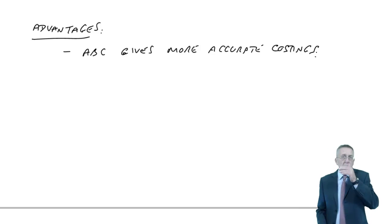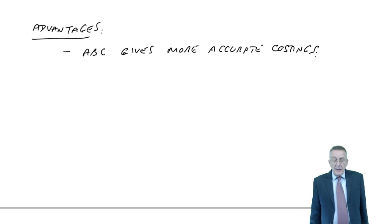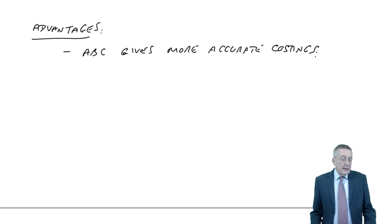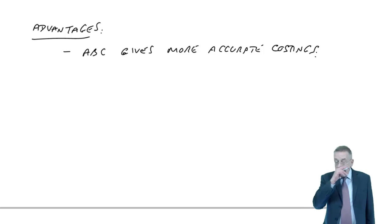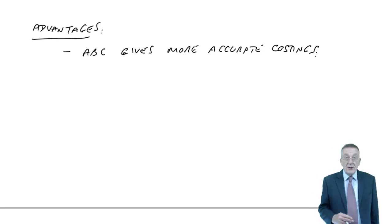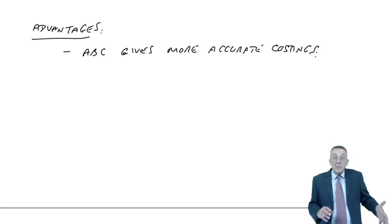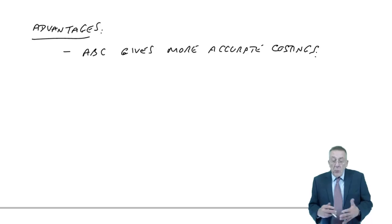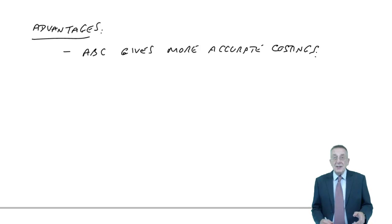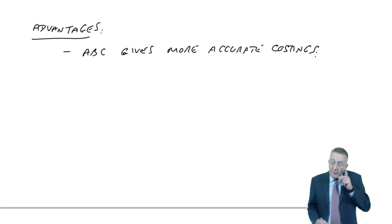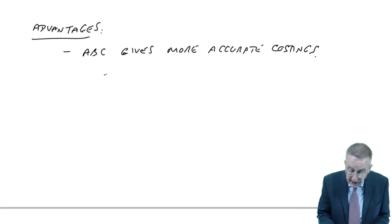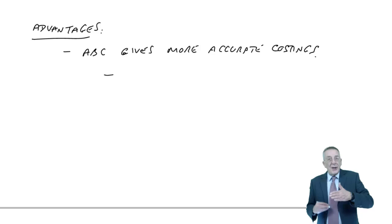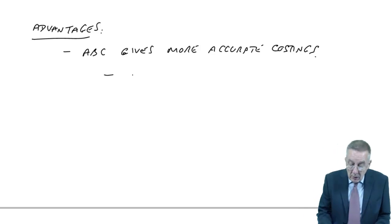However, just saying that on its own isn't enough. Because remember, at the end of the day, there is only one business, and the total overheads are 190,000 whichever approach we're using to get a cost per unit. So why does it matter that we've got more accurate costs per unit? There are two reasons. One is that the more accurate the costing is, we're able to set better selling prices.